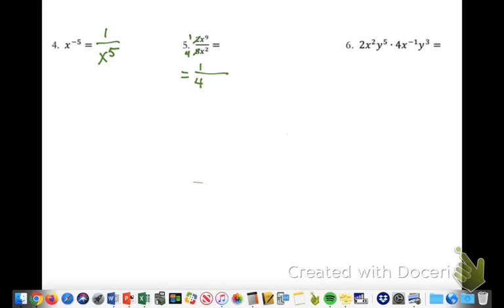Then we'll deal with our x variables. So we want to combine those. We are dividing x to the 9th power by x squared. When you divide same bases, you can subtract those exponents.